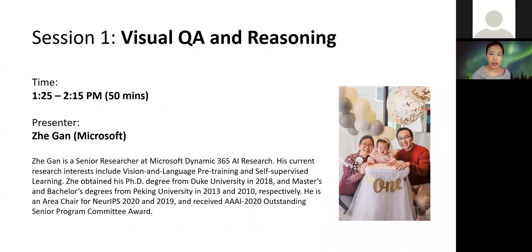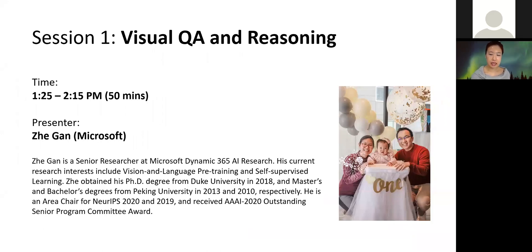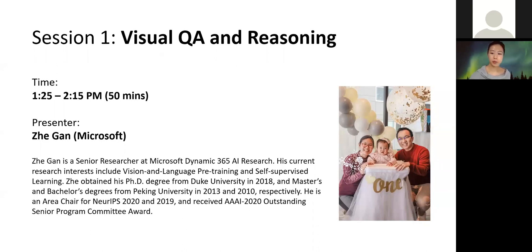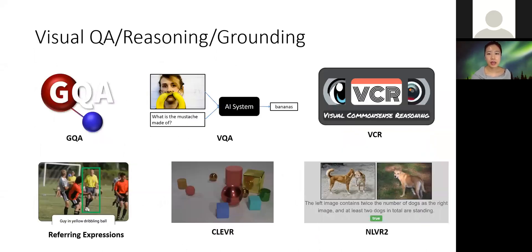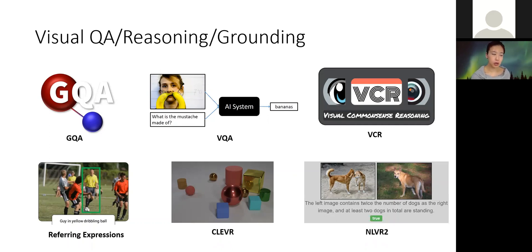The first part is visual QA and reasoning. This session will be chaired by Joe Gan from Microsoft, who is a senior researcher in our team. Joe received his PhD from Duke University, and his current research interests include vision and language pre-training and self-supervised learning. He is the leading author of the latest VILA model, which achieves new state-of-the-art across many vision-language benchmarks. In visual understanding tasks, the model takes both image and text as input signals and learns through multi-modal fusion for question answering, inference, or common sense reasoning.